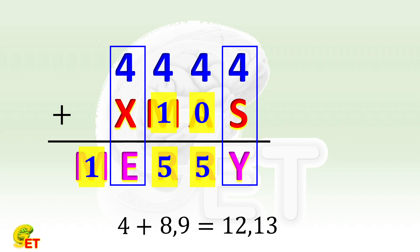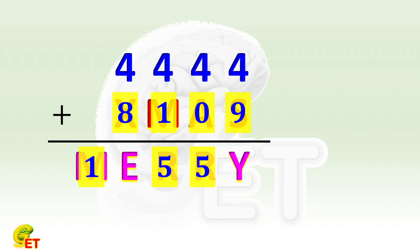One is 4,444 plus 9,108 equal to 13,552. The other is 4,444 plus 8,109 equal to 12,553. Thank you for watching, and see you next time.